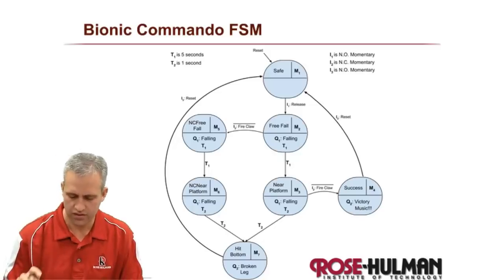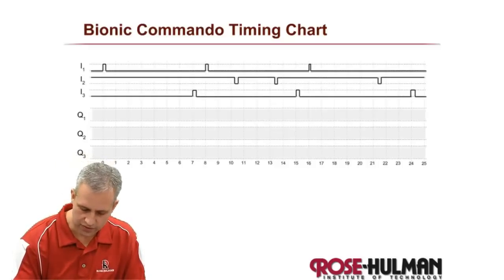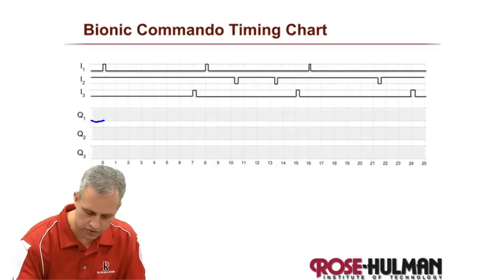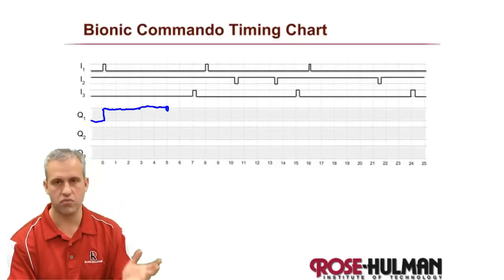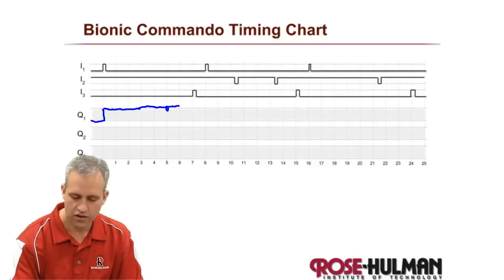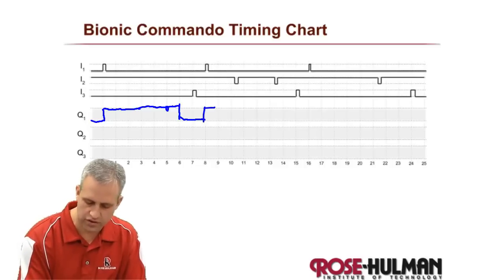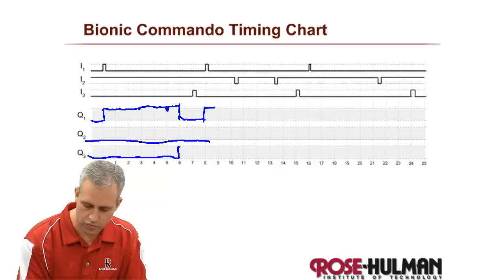Let's look at the timing chart. I1 is free fall — you start your free fall, fall for five seconds, then there's the near-platform time. You just continue to fall there. In this first instance no claw was fired. You quit falling right there and then start falling in the next case. At no point was victory music ever played, and sure enough you were going and then boom — right there is where you had a broken leg and then reset the game.